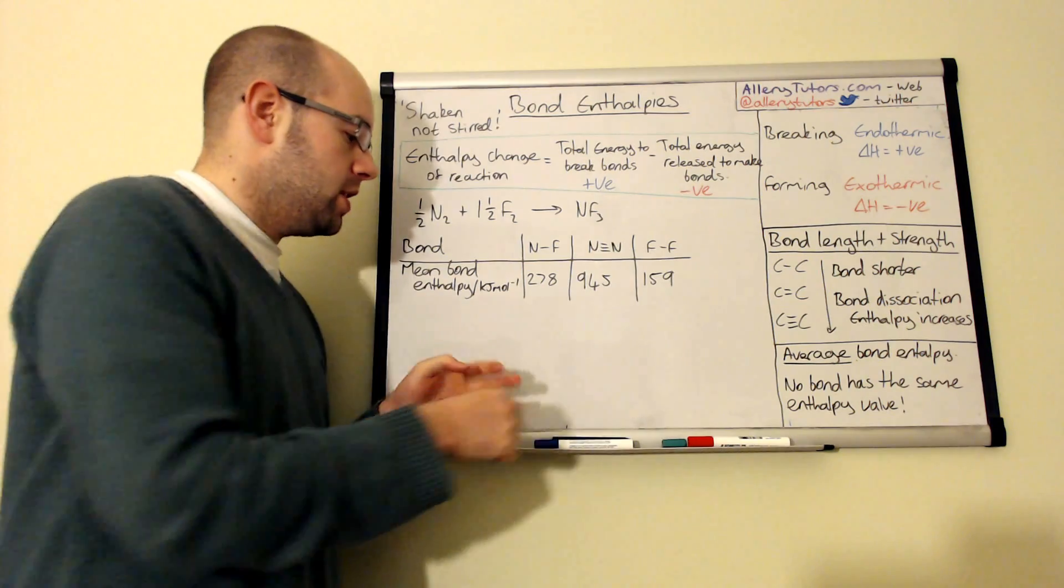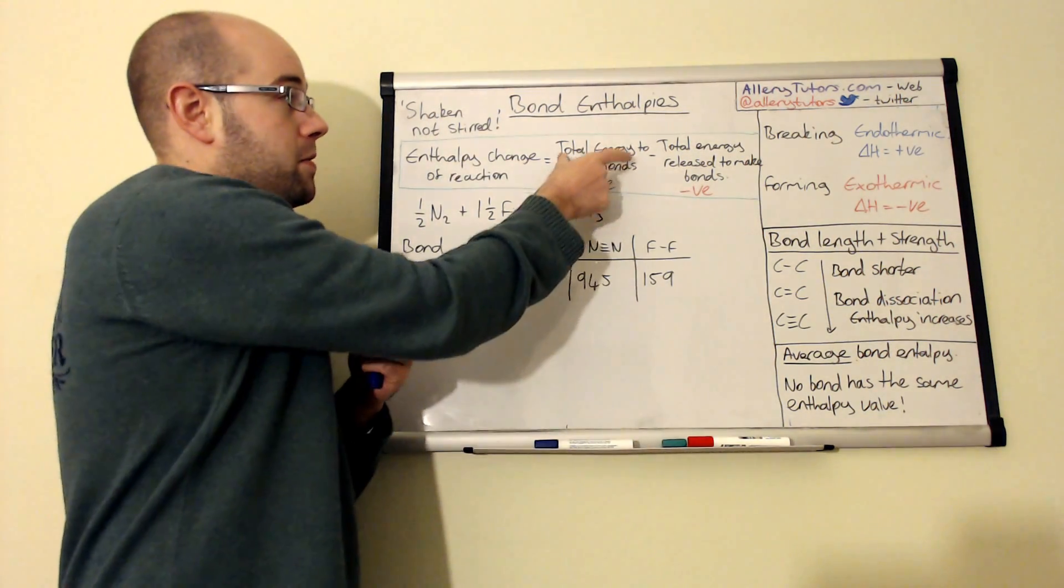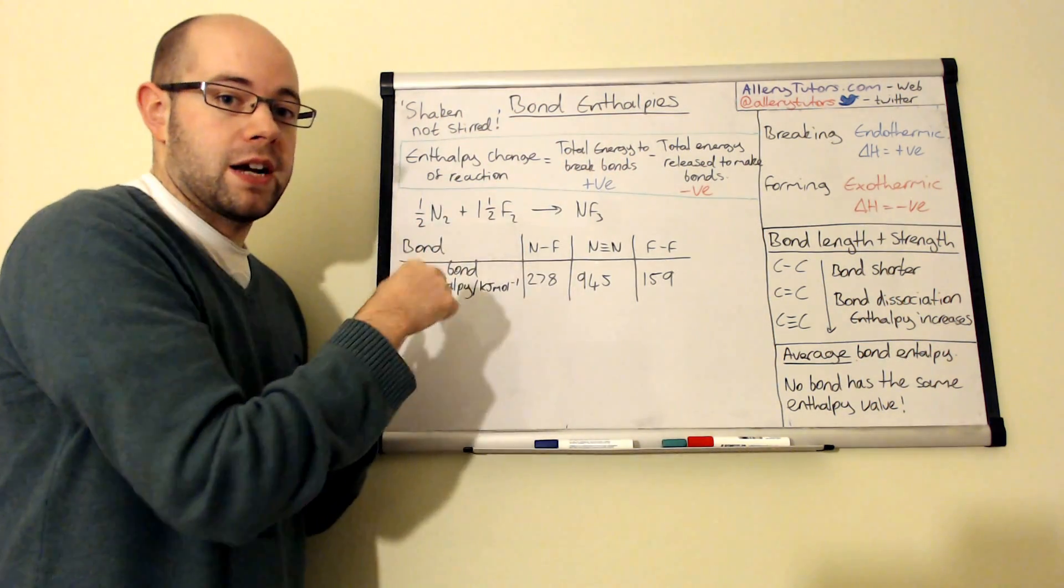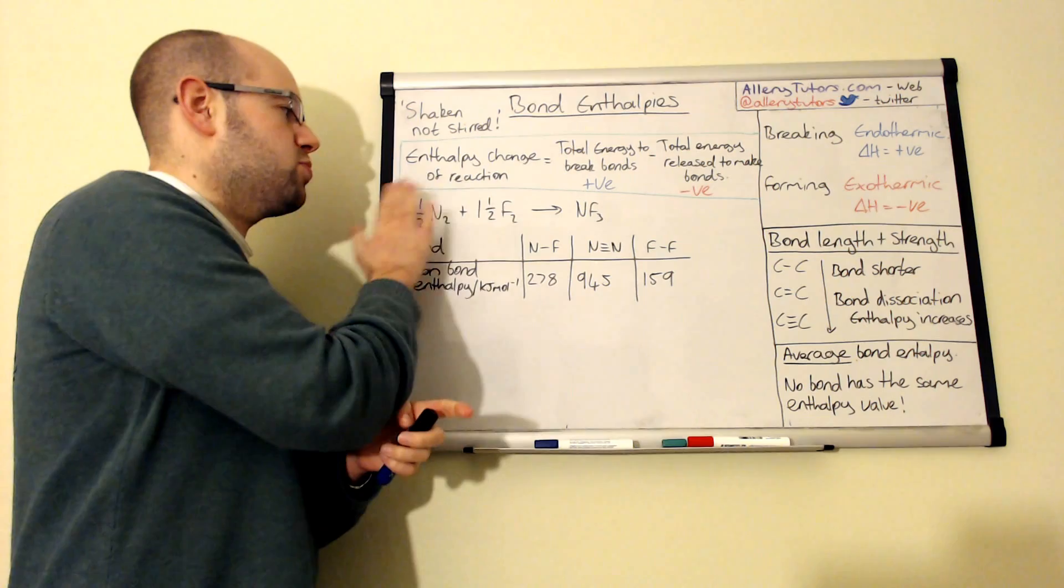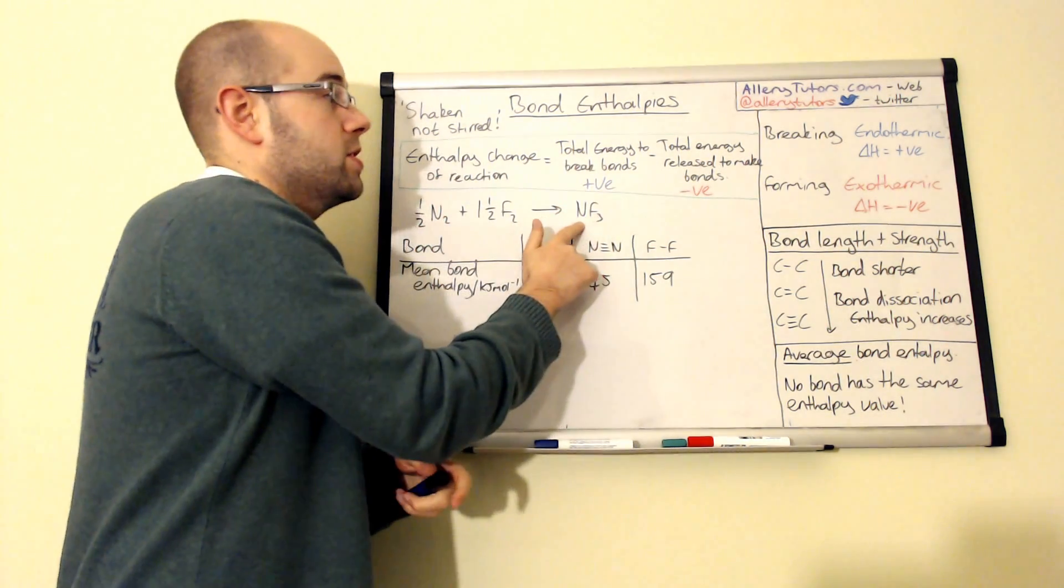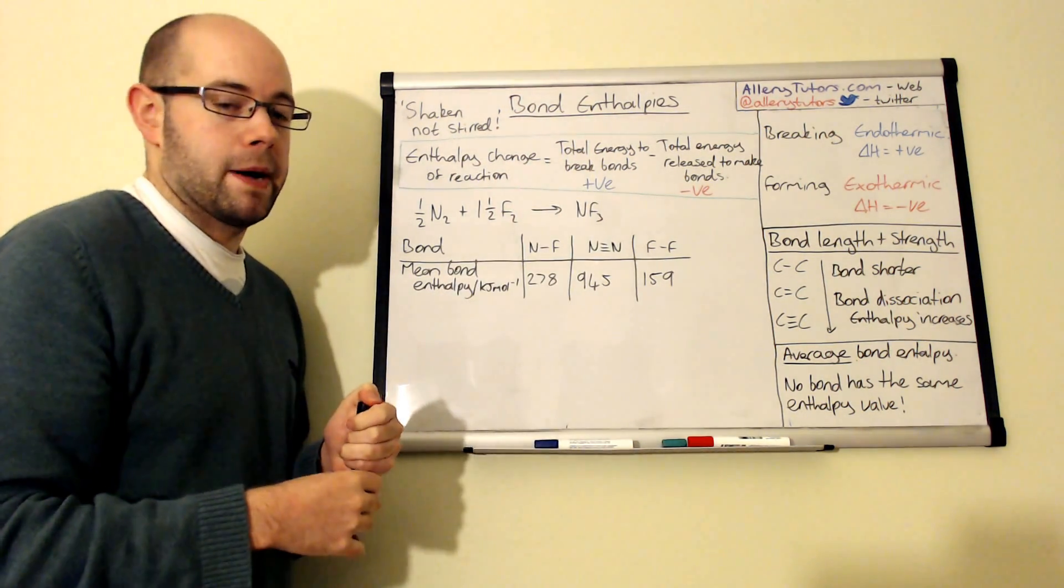Now what we've got to do is split this into two parts. We work out our bonds, the amount of energy, the total amount of energy needed to break all of the bonds in our reactants, and that's the assumption that we make, that we break every single bond there. And then we work out the amount of energy that's released when we reform to make new bonds and to make a new compound.